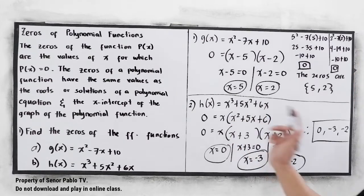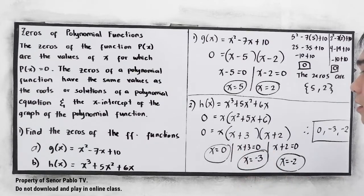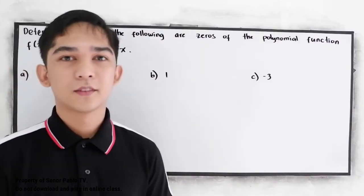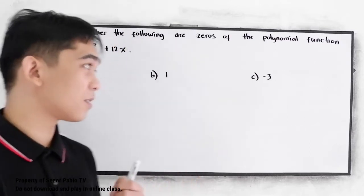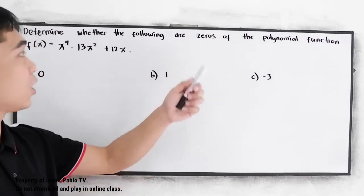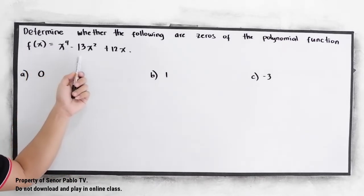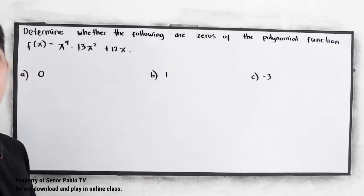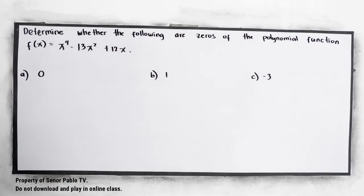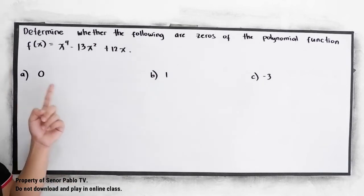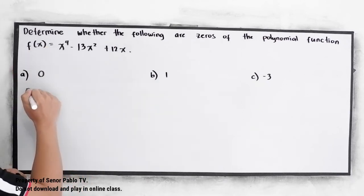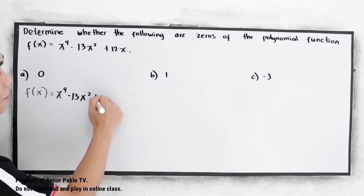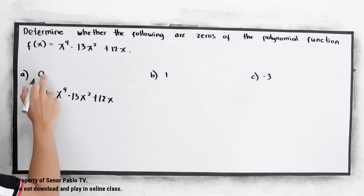If you want to check, you can substitute the given values for x — these must each equal 0. Let's have another example. Determine whether the following are zeros of the polynomial function f of x is equal to x raised to the 4th minus 13x squared plus 12x. The values to test are: a) 0, b) 1, c) negative 3. We're going to test each by substituting into the function.